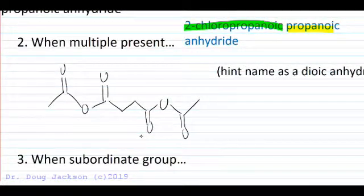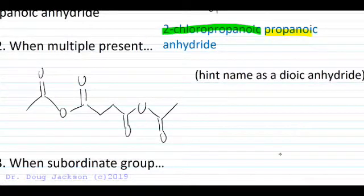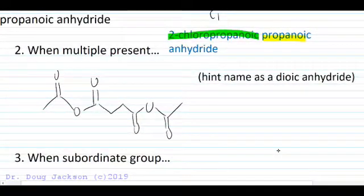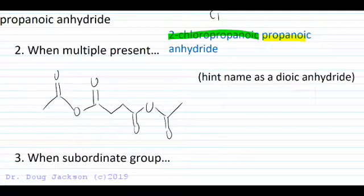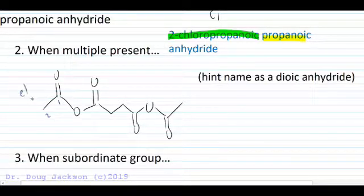When there are multiple anhydrides present, it gets a little bit complicated, but what we want to do is name it like a dioic acid, and then the individuals on the end. So here we have ethanoic, and on the other end, we have an ethanoic end.